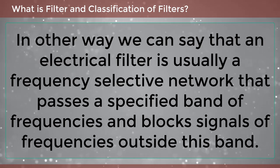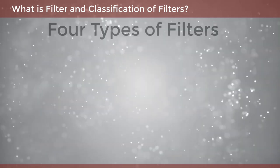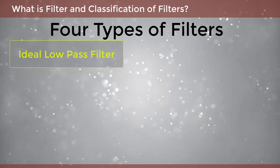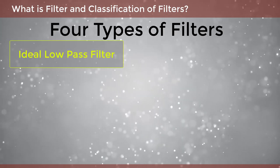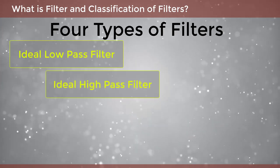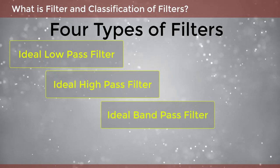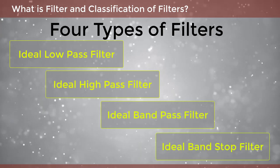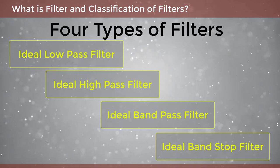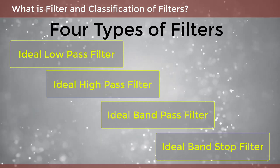According to the operating frequency range, the filters are classified into four types: ideal low pass filter, ideal high pass filter, ideal band pass filter, and ideal band stop filter. Now let's look into them one by one.